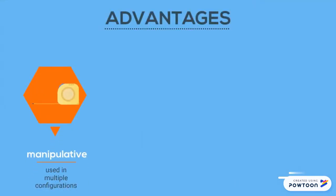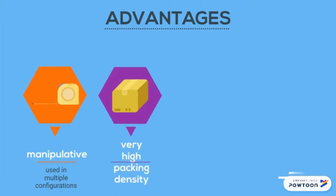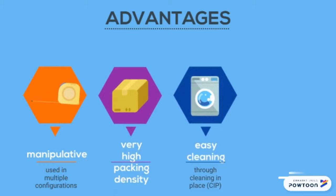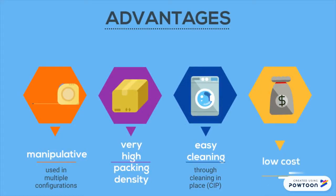The advantages of spiral wound membranes are that they come in multiple configurations with different spacers, membrane types, lengths, and diameters, allowing use in a wide variety of applications. These elements have a very high packing density, surpassing that of plate and frame, tubular, and capillary configurations. Spiral membranes allow for easy cleaning through cleaning-in-place, and offer the best value for membrane area, a smallest footprint, robust design preventing membrane breakage, and relatively low capital and operating costs.